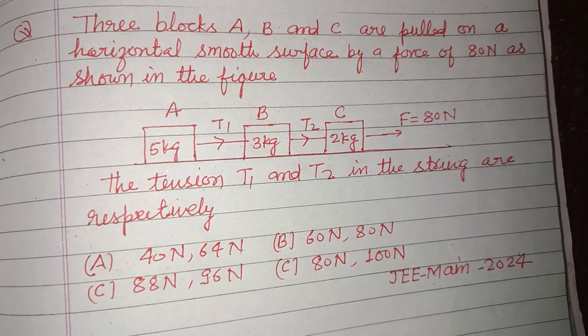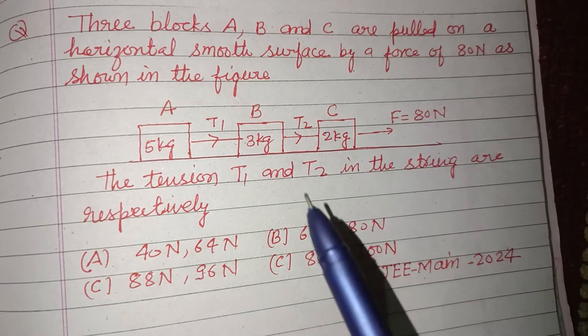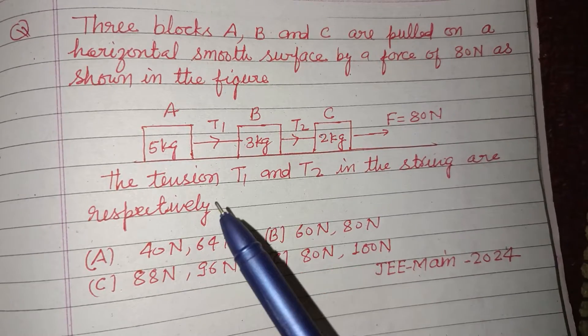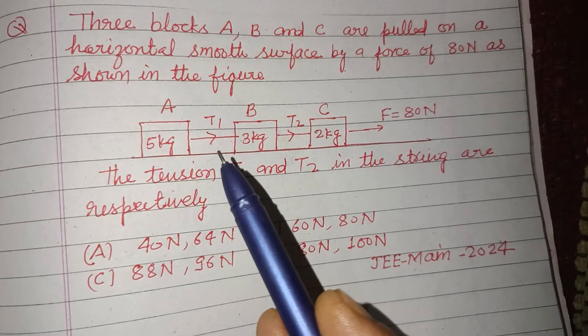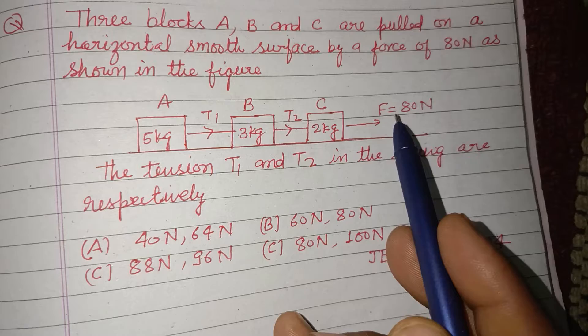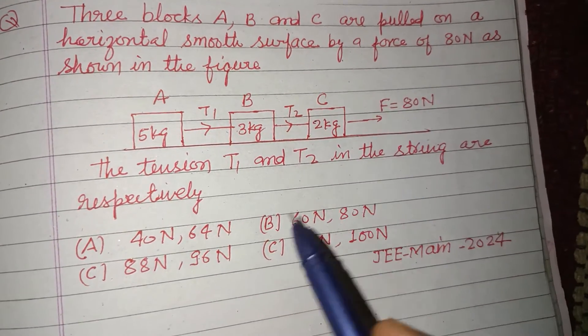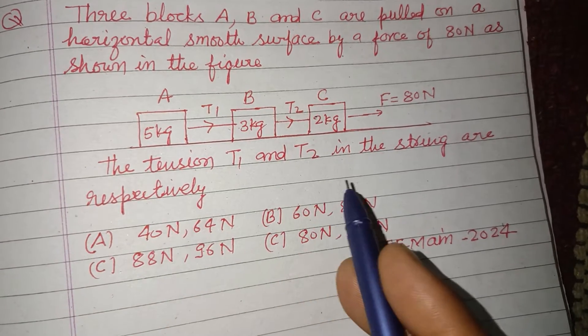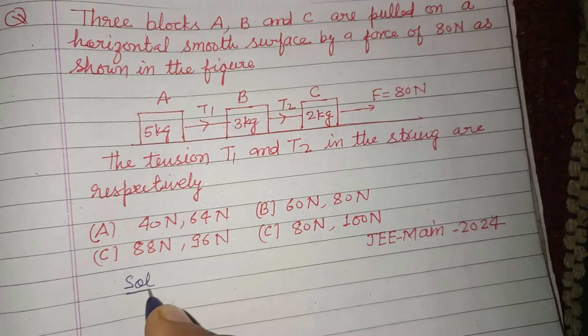Hello viewers, warm welcome to this YouTube channel. This is a question from JEE Main 2024. Three blocks A, B, and C are pulled on a horizontal smooth surface by a force of 80 Newtons as shown in the figure. The tension T1 and T2 in the strings are respectively what we need to find. So first we...